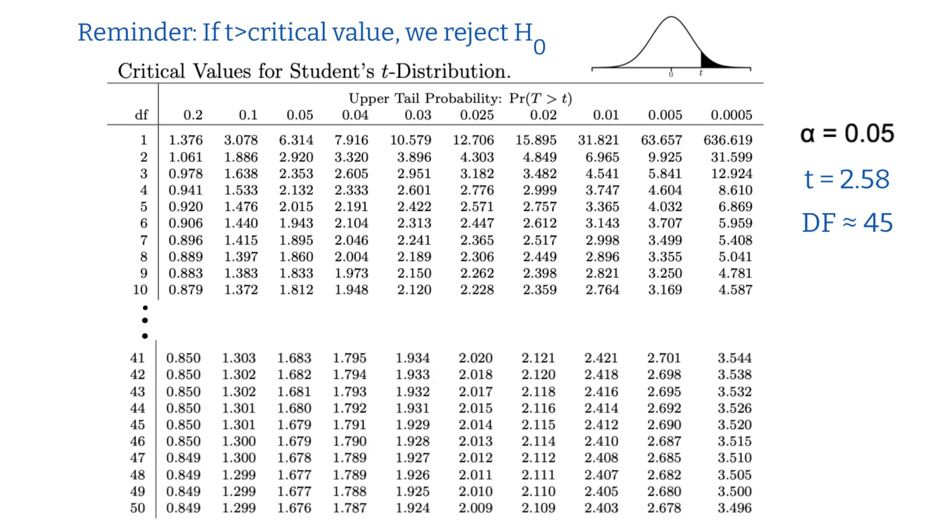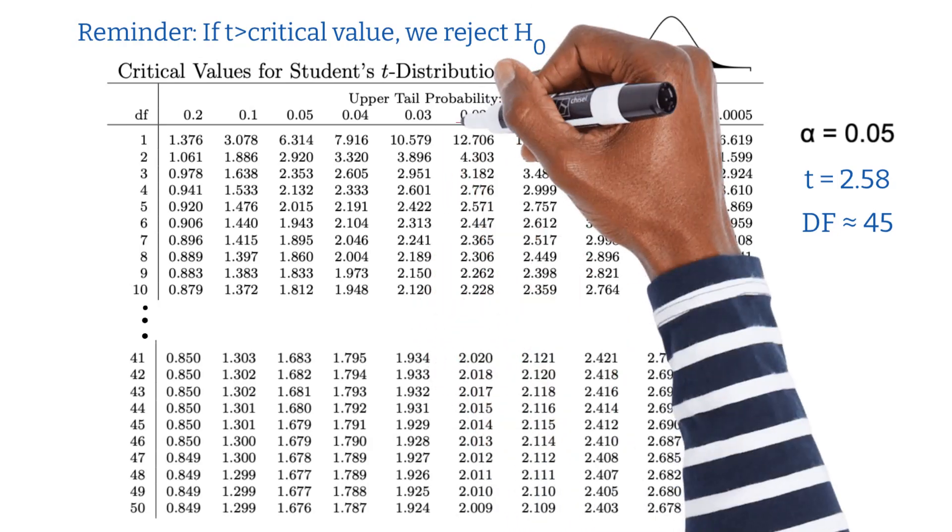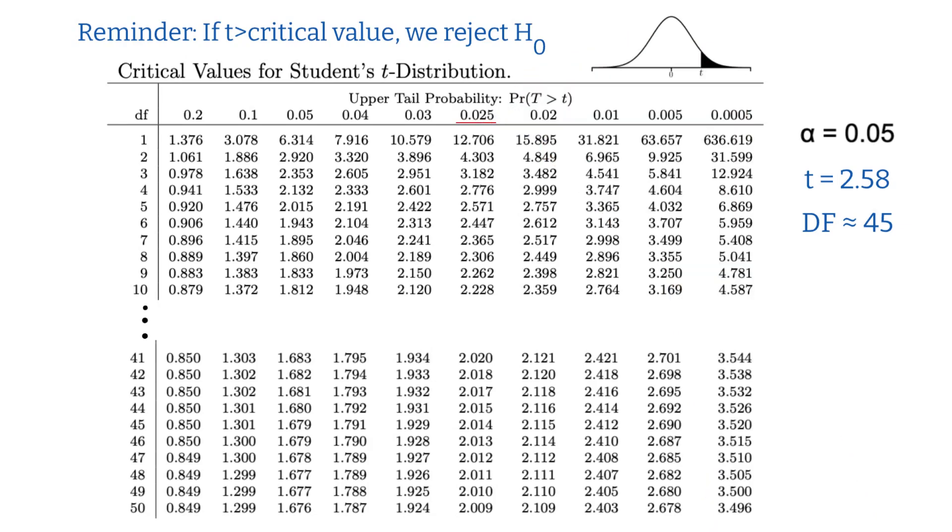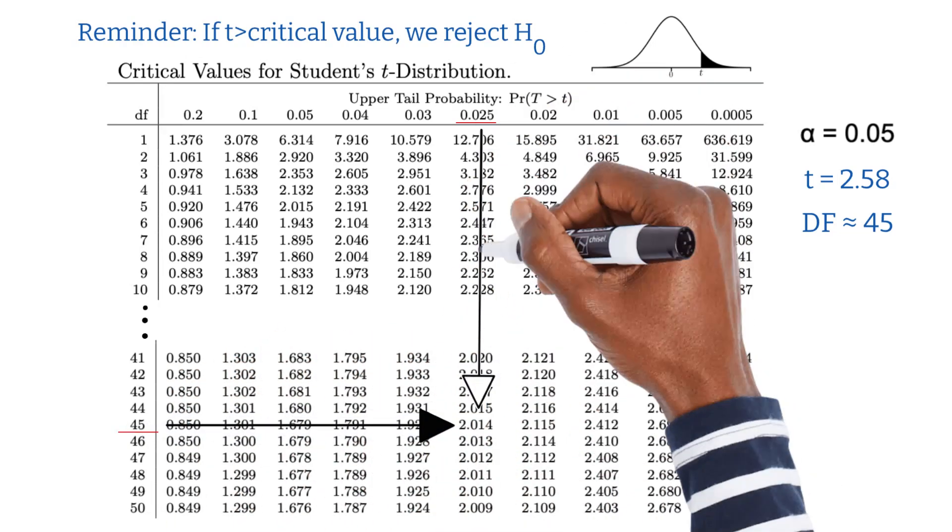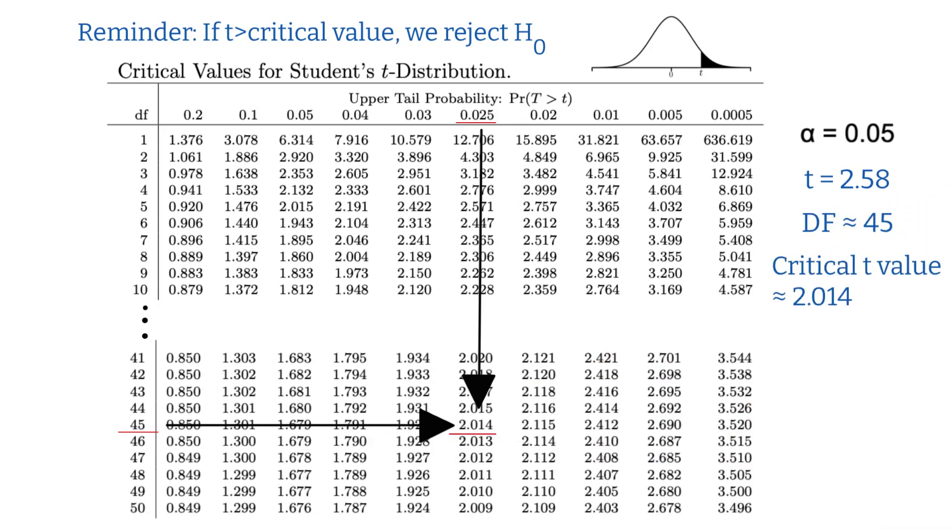To find the critical t value, let's look back at the table. But before we do, because it's a two-tailed t-test and the table shows only one tail, we have to split the significance level in half. 0.025 for the left and 0.025 for the right. Now, we find 0.025 at the top and look for the degrees of freedom closest to 45 on the left side of the table. The critical t value is approximately equal to 2.014.